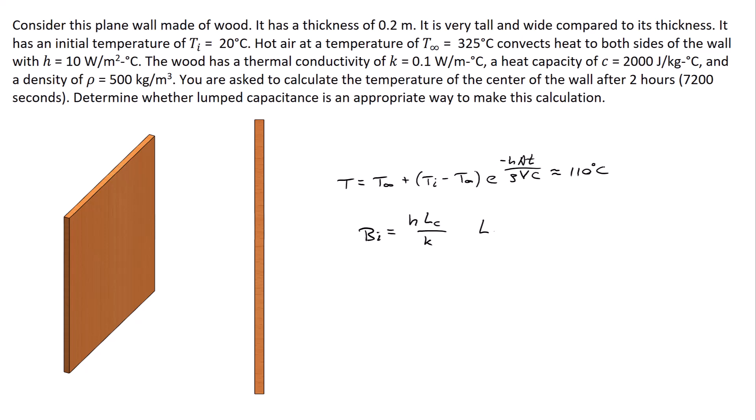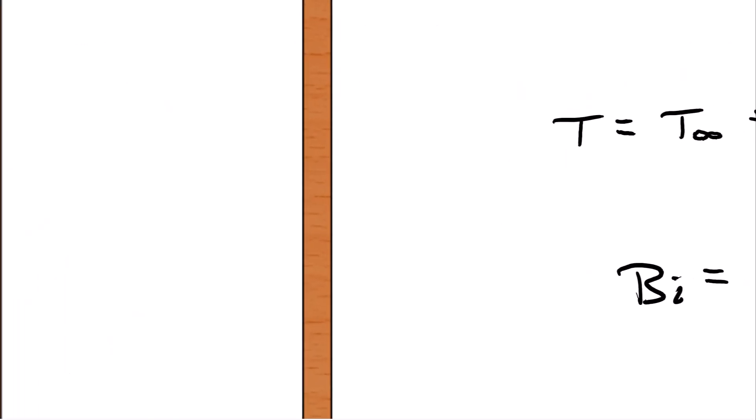The characteristic length in this case is going to be the distance over which the temperature gradient would occur. So in our case, this distance that we're talking about would be the distance between the center line of the wood and the exterior of it. So the total thickness of the wood is 0.2 meters. The characteristic length that we're looking at is going to be 0.1 meters.